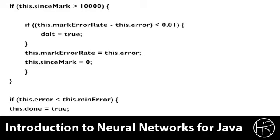If we continue through, then we set the error rate equal to the current error, and we reset the mark rate to zero because we've just sampled the error rate, so we don't need to do this again for 10,000 iterations. If the error is less than the minimum error rate that we're looking for, then we've found a good solution and we mark this, we can mark done to true because we are basically done iterating through the incremental algorithm.